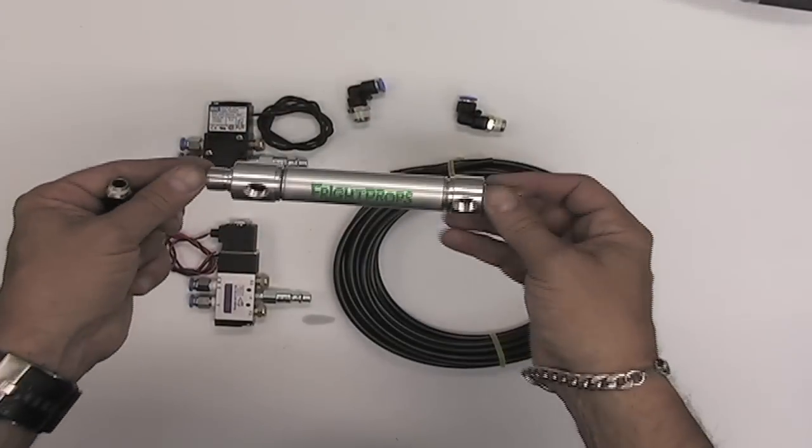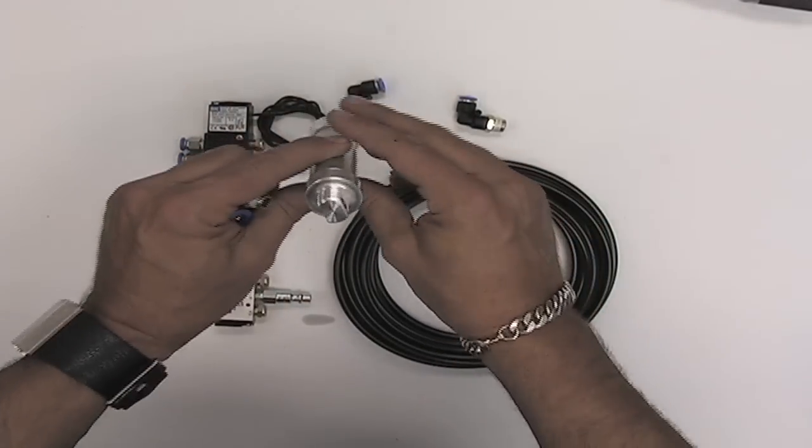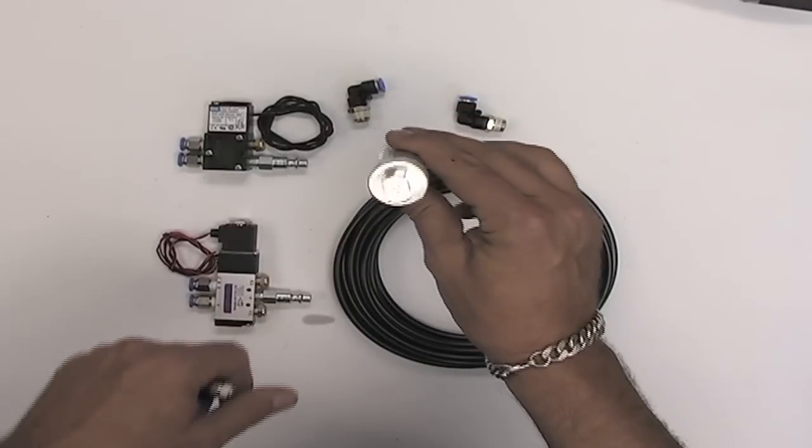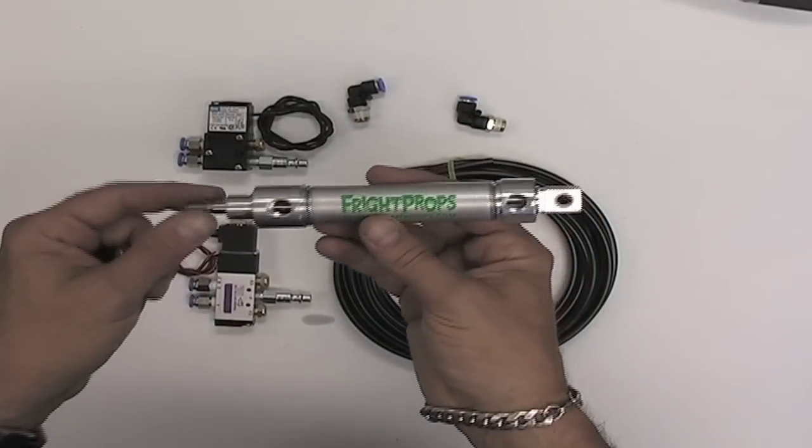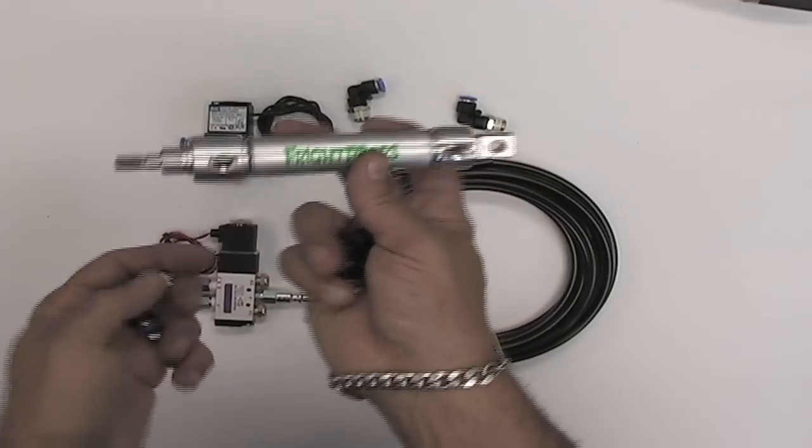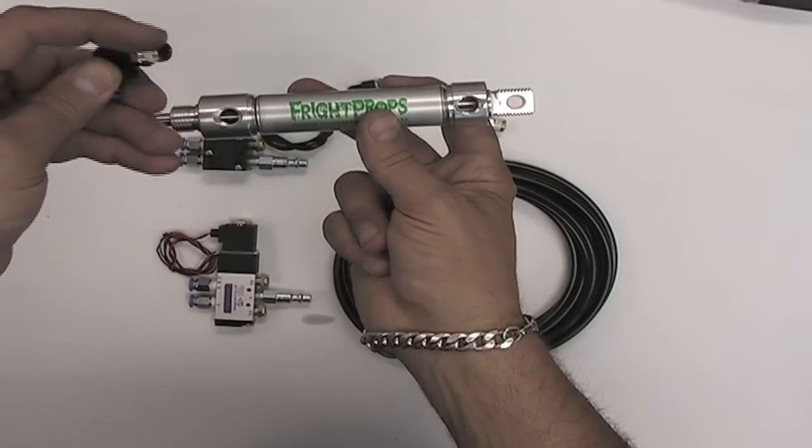The cylinder I'm using here is a three-quarter inch bore. Bore is how big the capacity is inside of the cylinder, and the three-quarter inch bore uses eighth inch threaded fittings.